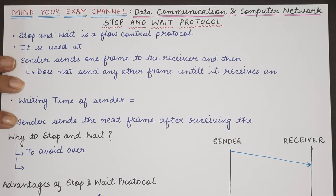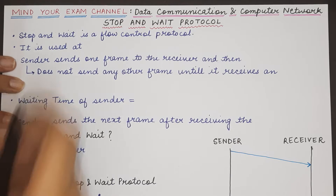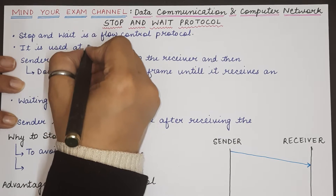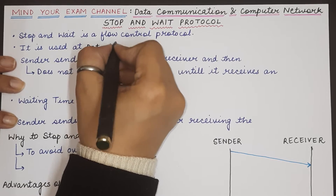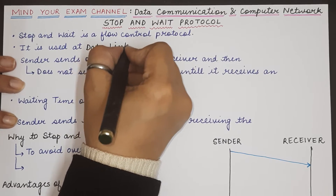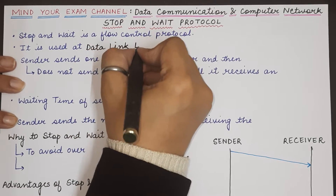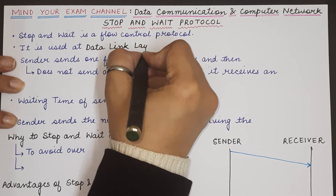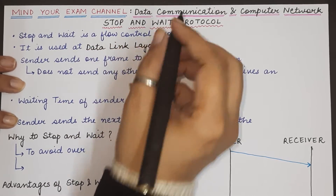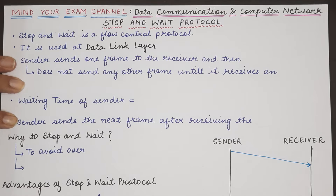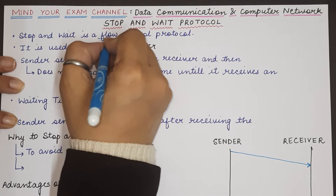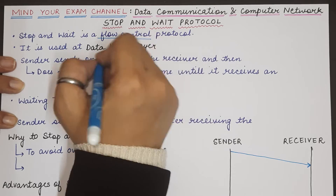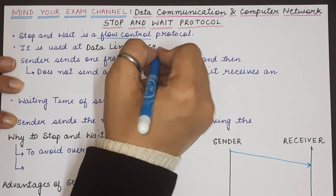This protocol is used at the data link layer. We have seen that flow control is a functionality of the data link layer, and that is why the stop and wait protocol is used at the data link layer.